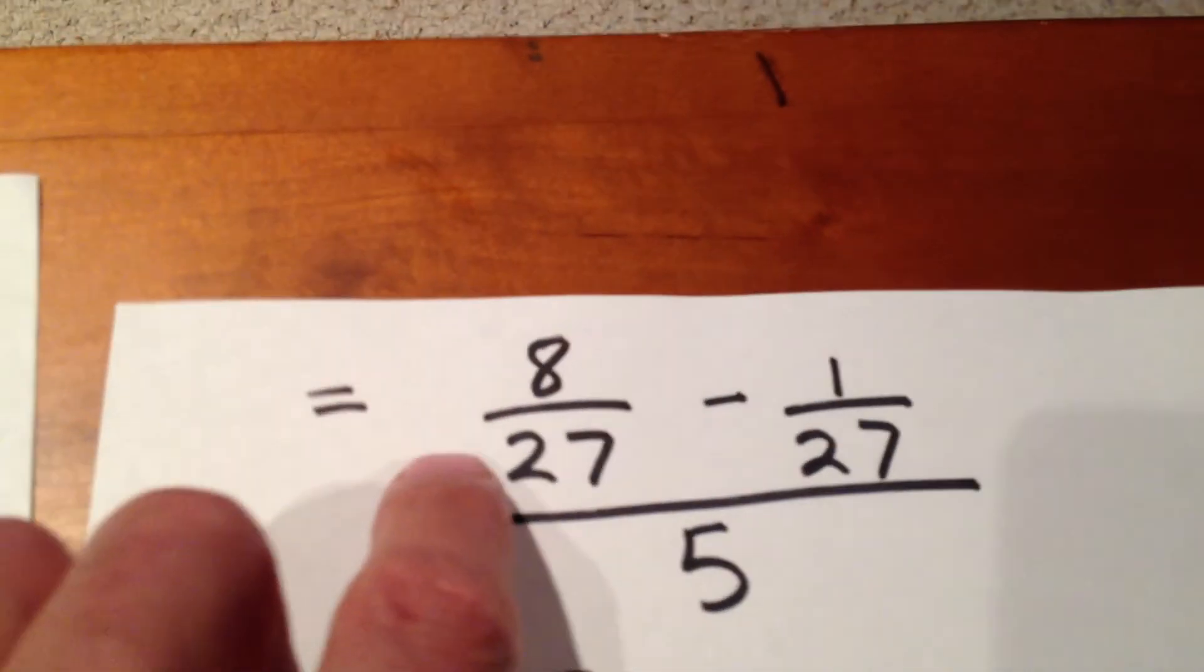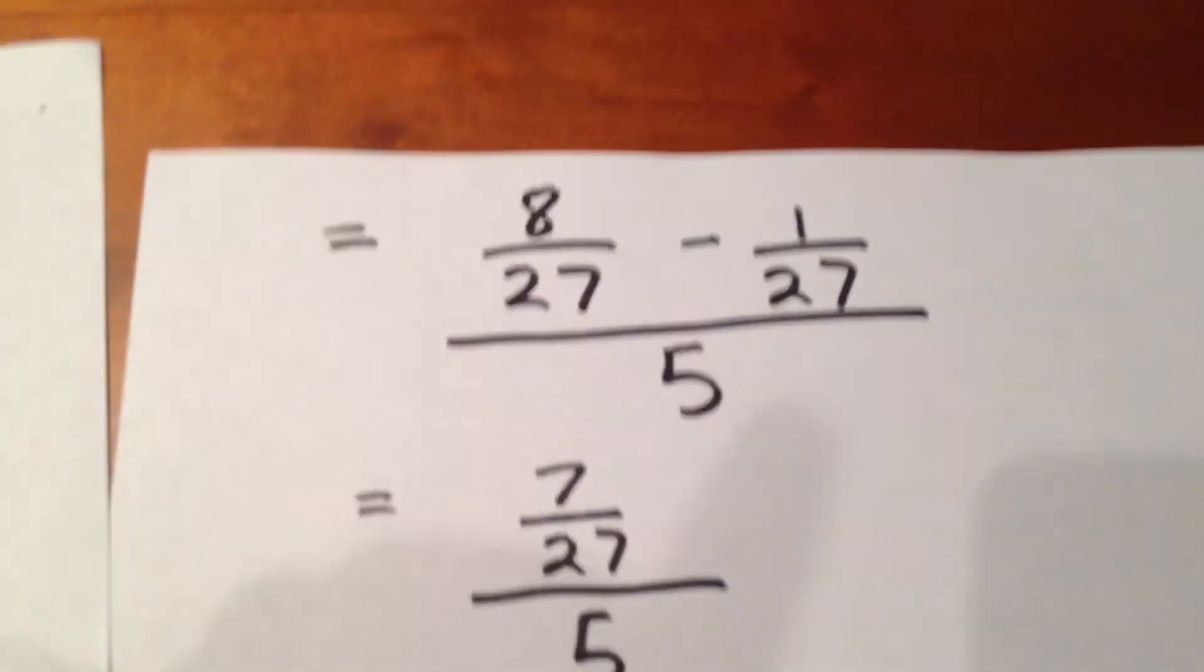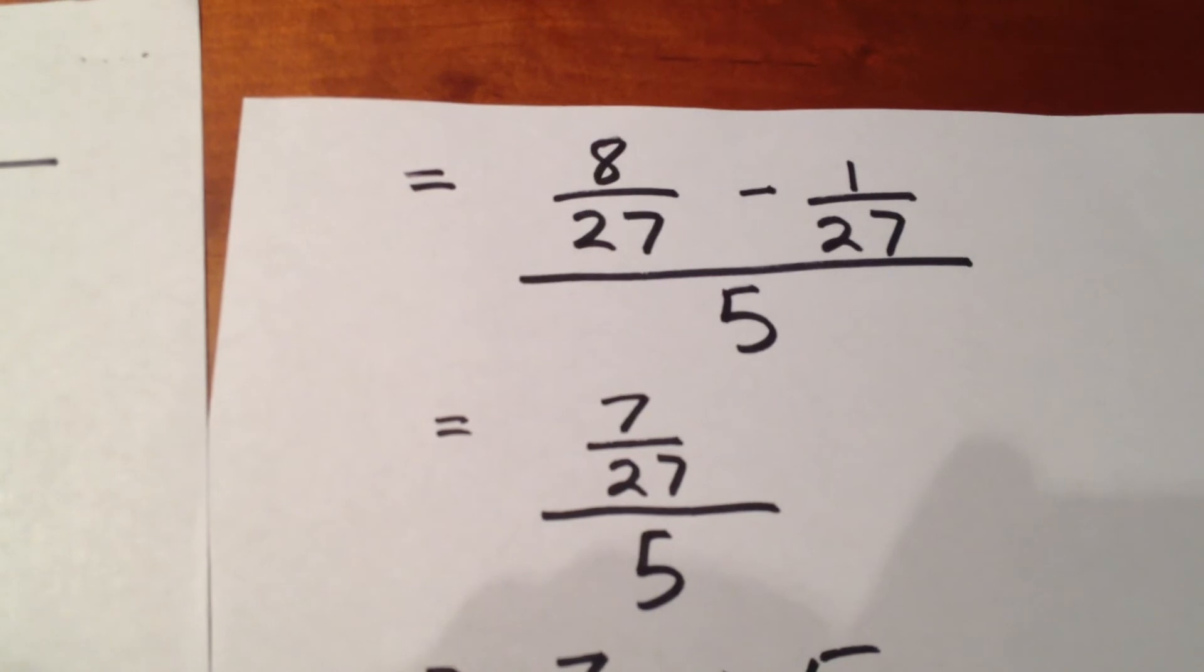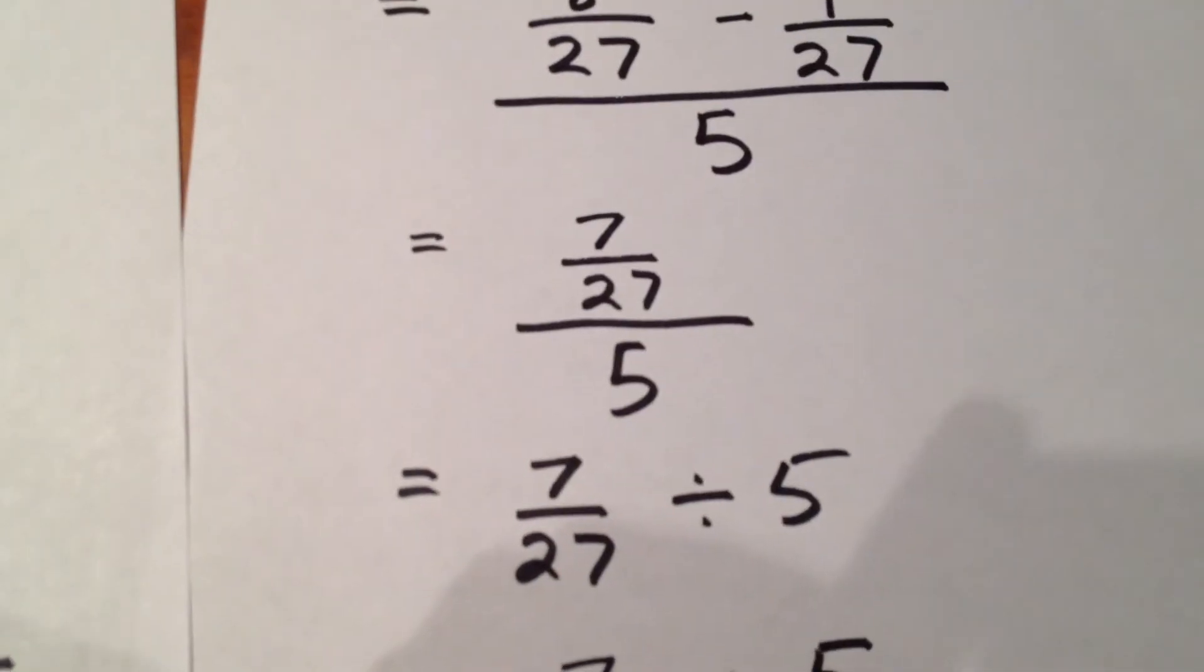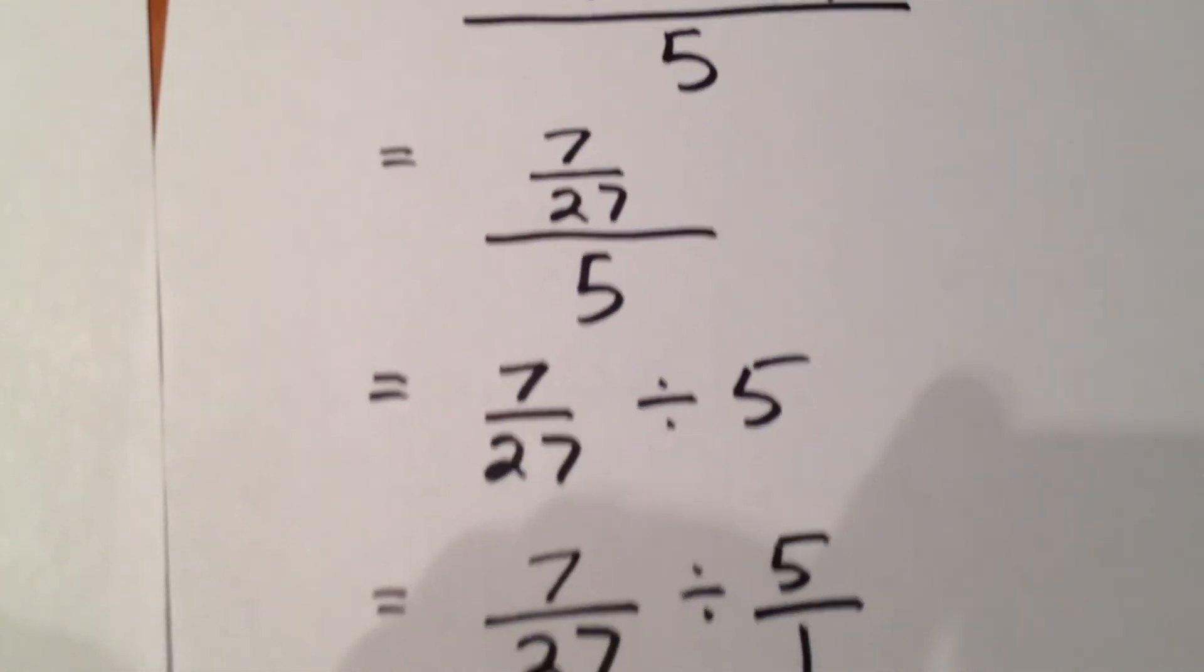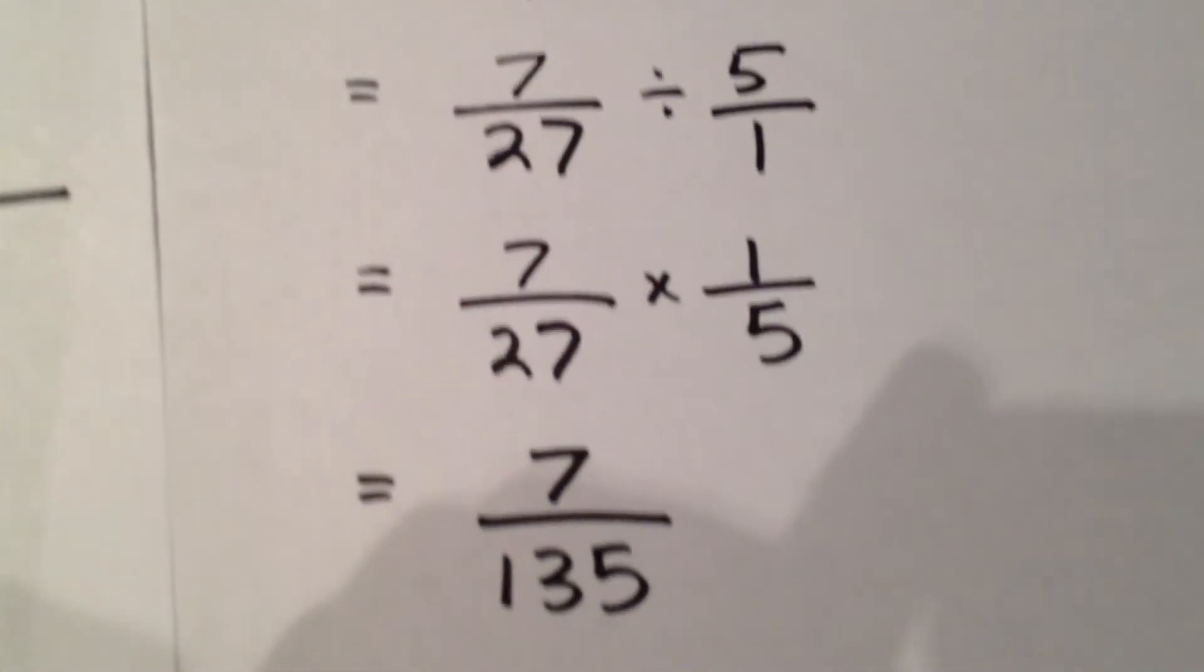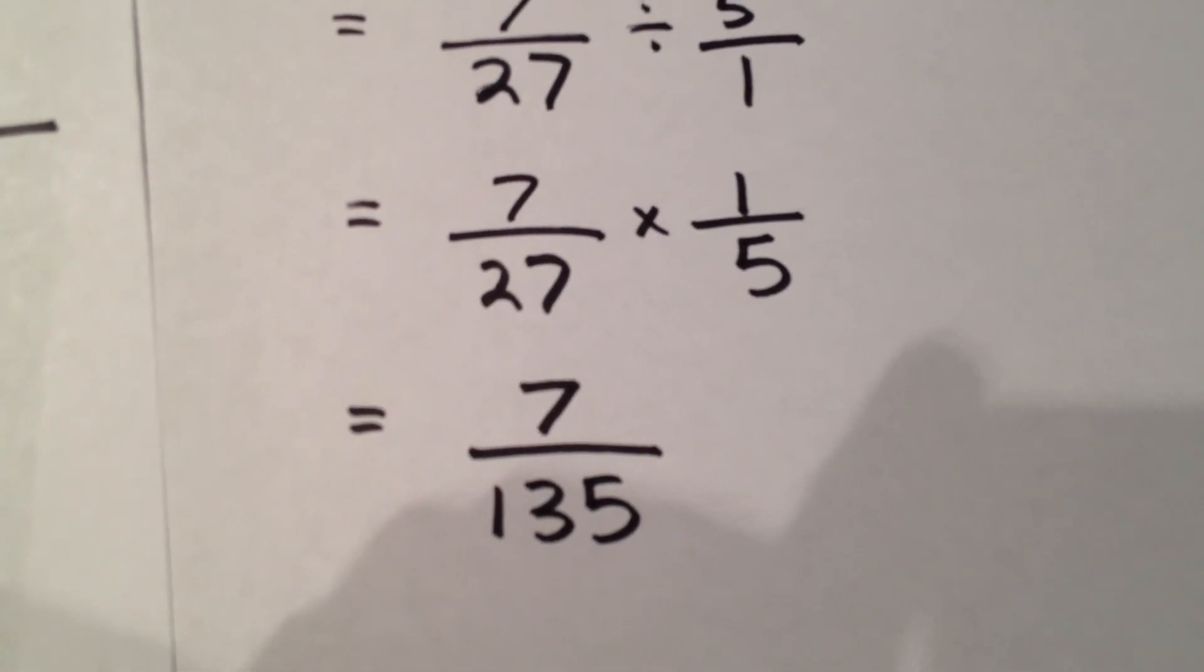And, so, this is our expression, still over 5. 8 over 27 minus 1 over 27 is 7 over 27, but, again, that expression is over 5. So, that's 7 over 27 divided by 5, which is 7 over 27 divided by 5 over 1, which is 7 over 27 times 1-fifth, which is 7 over 135.